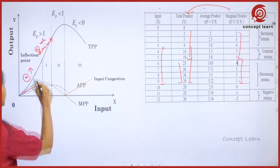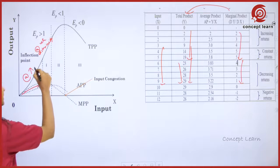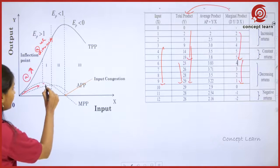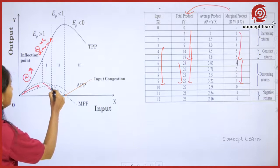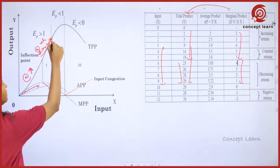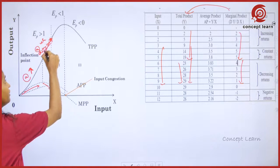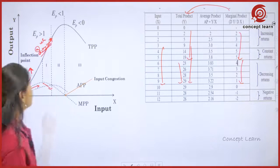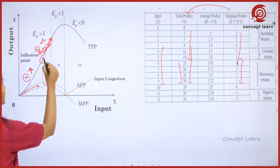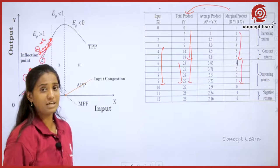So to summarize: when MPP is increasing, TPP increases at the increasing rate. When MPP is decreasing, TPP still increases but at a diminishing rate. This transition point is known as the inflection point.